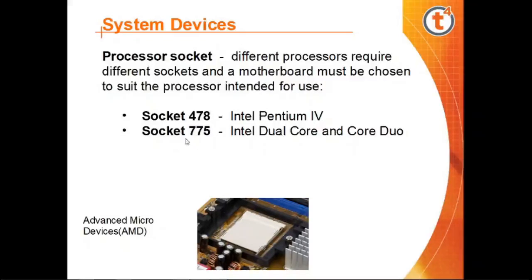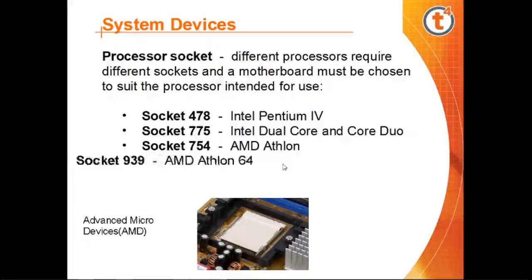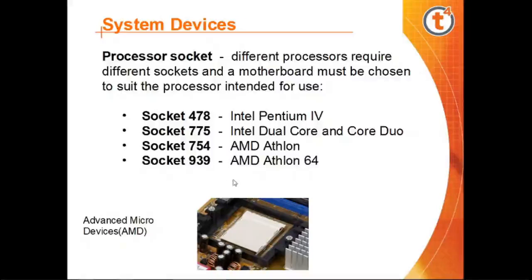Many sockets are available and their numbers help identify the socket type. Socket 775 is for Intel dual core, socket 754 is for AMD Athlon, and socket 939 is for AMD Athlon 64. Different sockets require different connections.